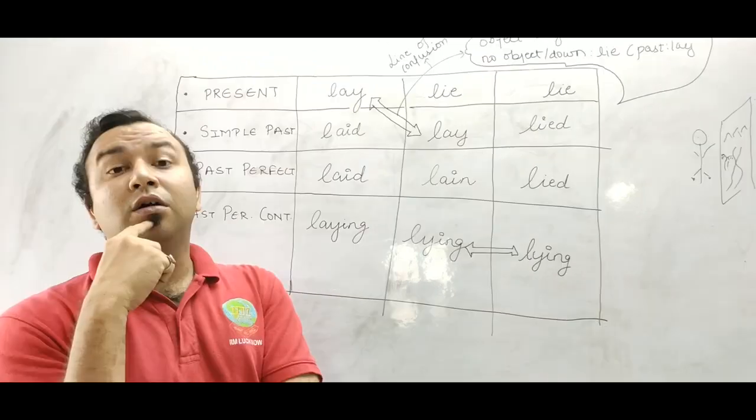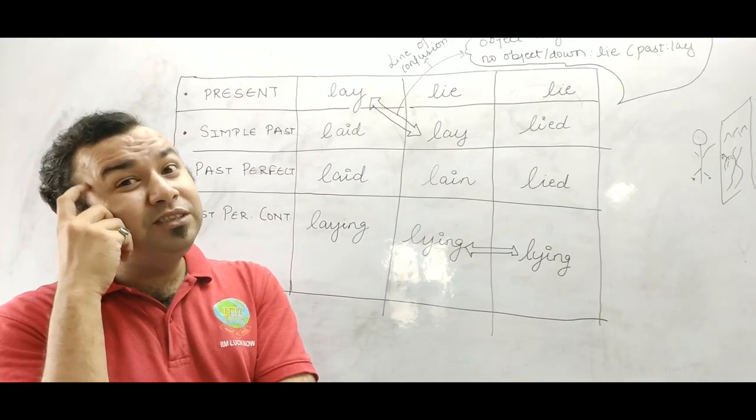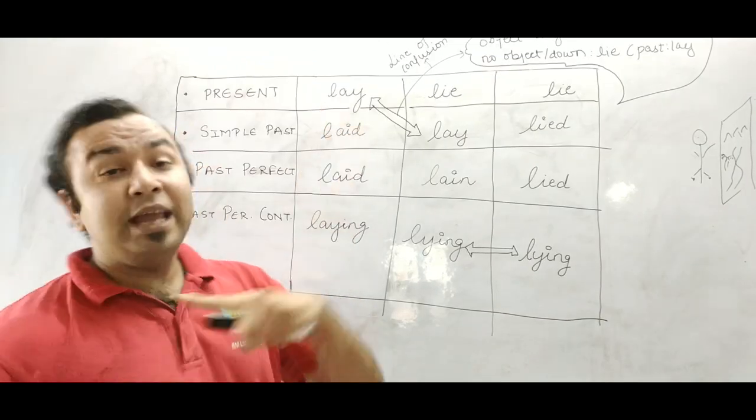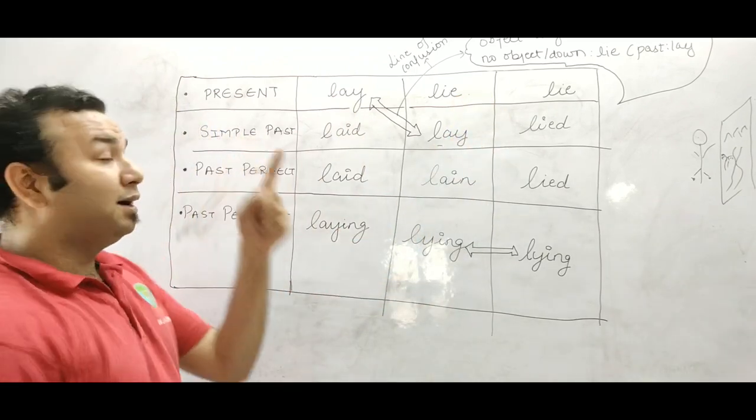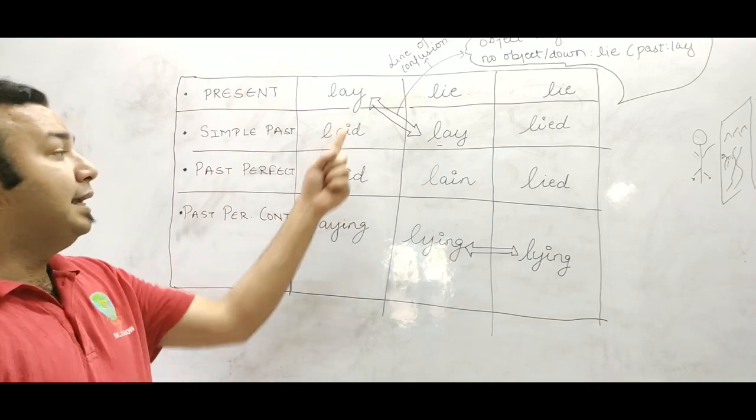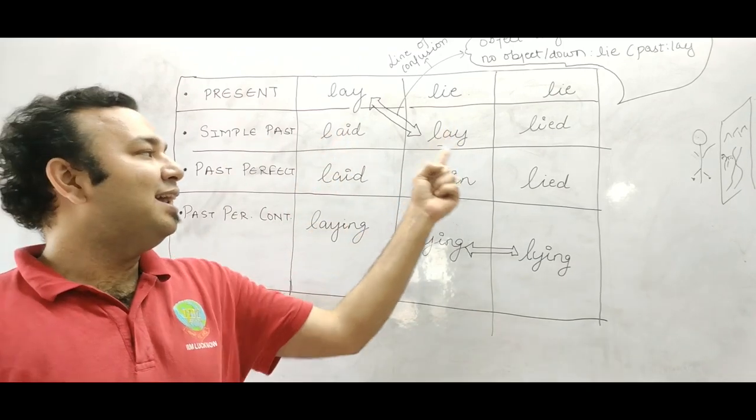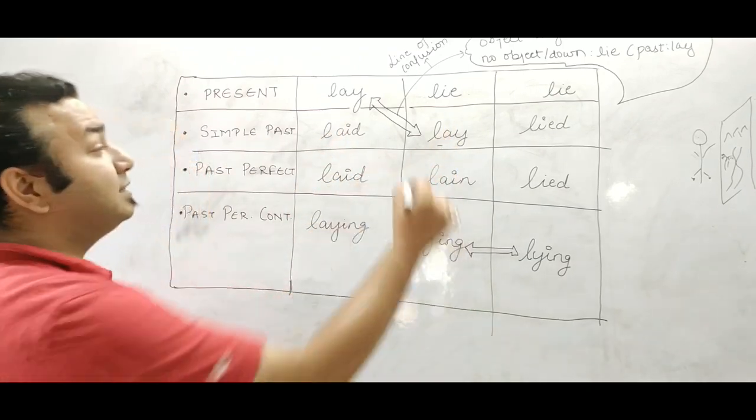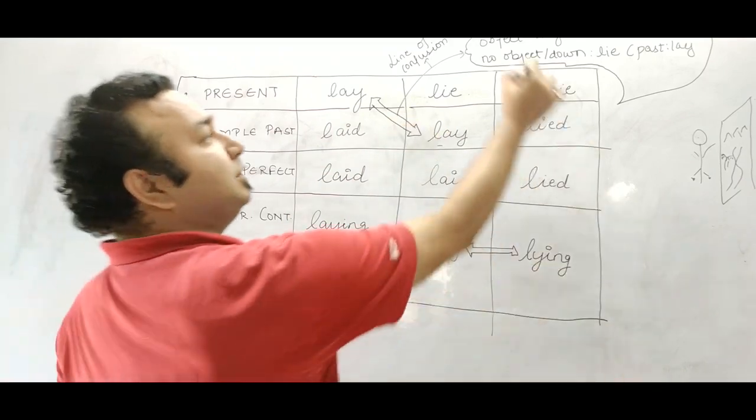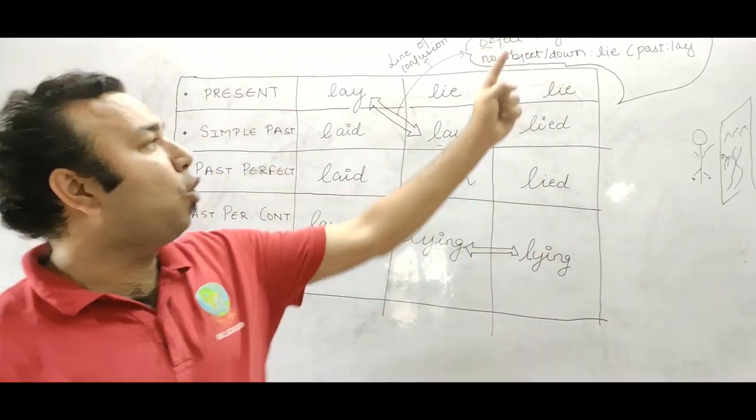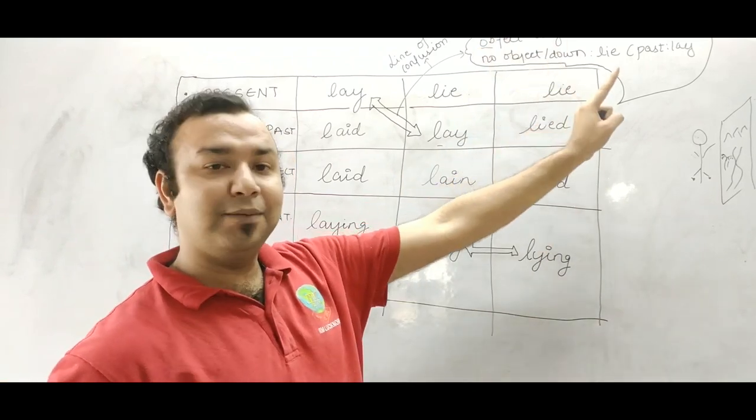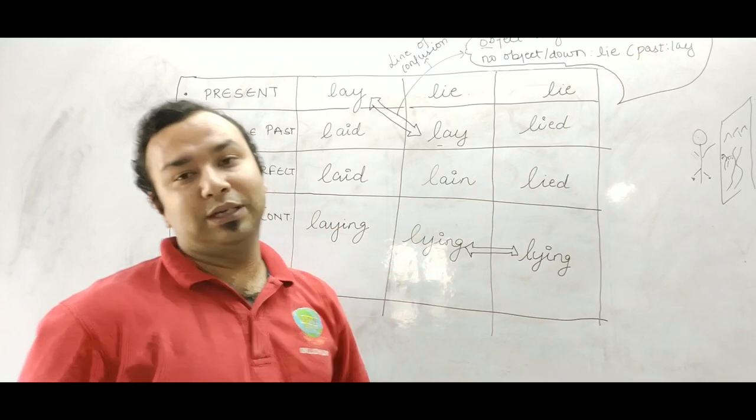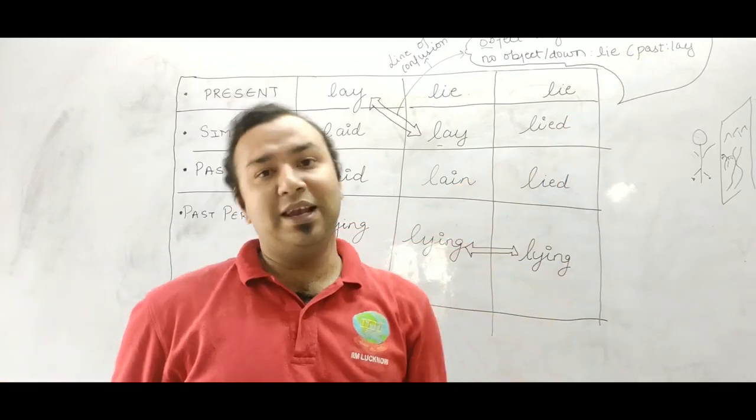So this lie is confusion. Lay or lie is confusion. Lie or lie is confusion. Lie past tense, simple past, lay. Lay, laid, laid. Lie, lay, lain. There's small confusion. But when you see sentence, when object comes, we use lay. And when object doesn't come, or down comes, we use lie, which has past tense lay.